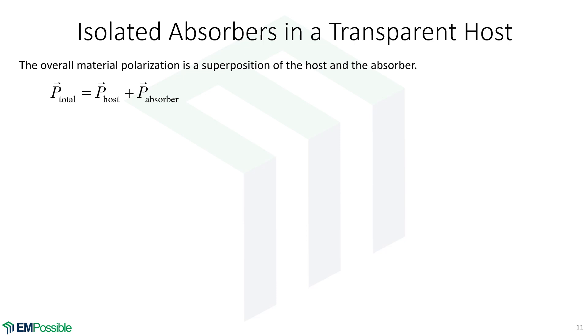Sometimes we hear about isolated absorbers in a transparent host. You have a nice well-behaved background—maybe glass or fluid, something low-loss—and we dope it with a strong absorber. We write the overall polarization of this mixture as the polarization of the well-behaved host plus the polarization of what we've added to it.